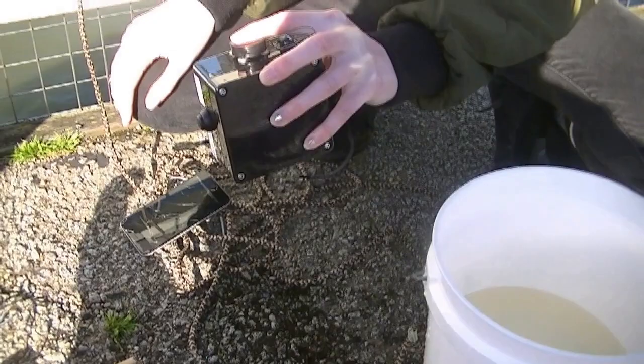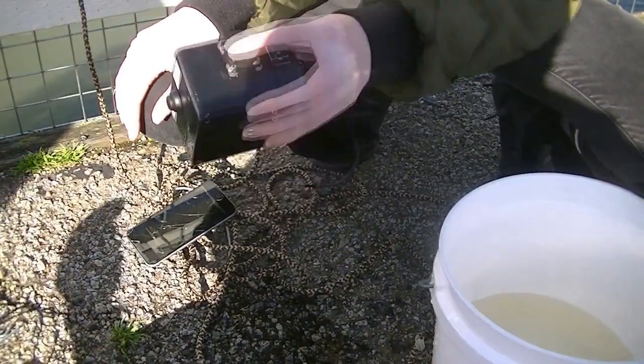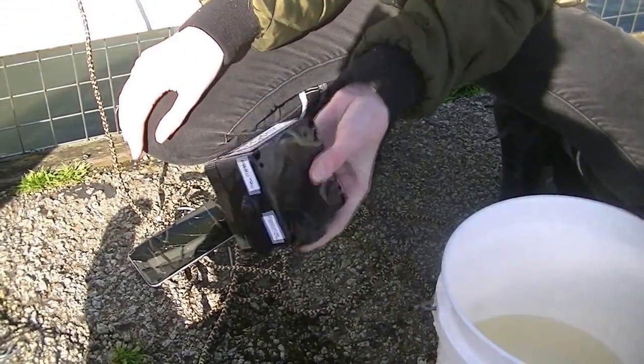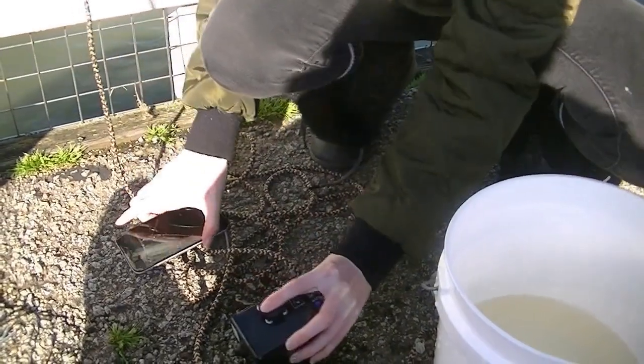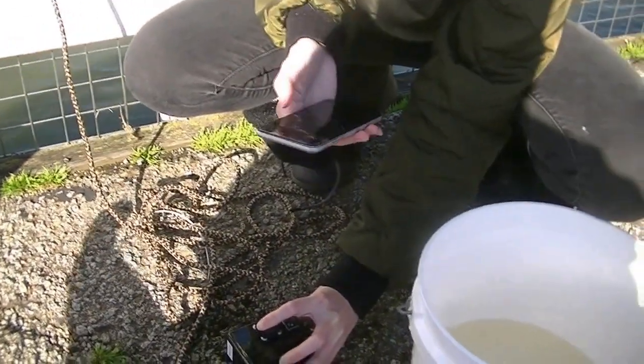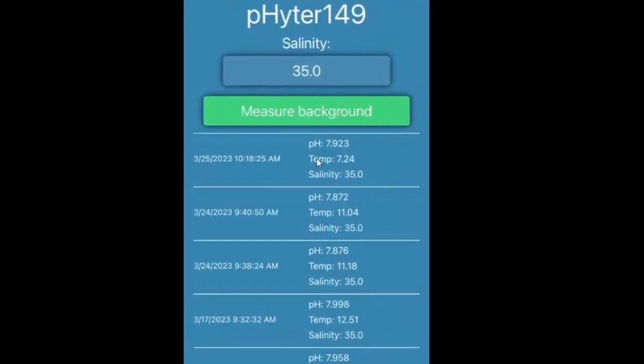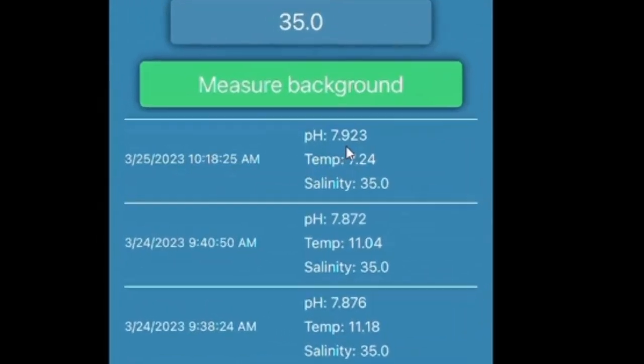Invert the Phyta three times to make sure the indicator is well mixed. After adding the indicator, press measure pH, and we have a pH of 7.92.